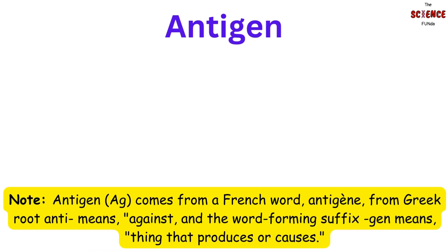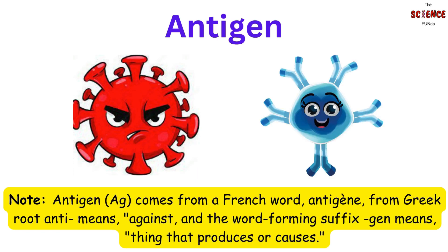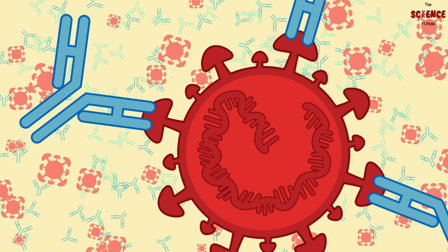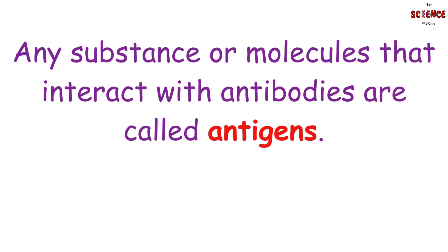Let's learn what an antigen is. An antigen is any foreign substance that can elicit an immune response in the body, such as antibody production, and is bound by the specific antibodies produced against it by the immune system. We have come to a conclusion that any substance or molecules that interact with antibodies are called antigens.